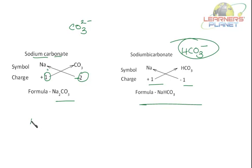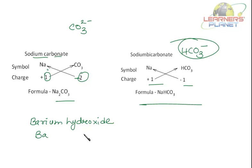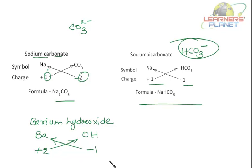For barium hydroxide, we write the symbols Ba and OH. Barium belongs to group 2 and forms 2 plus ions, while hydroxide is minus 1. Cross over the charges and you get Ba(OH)2.